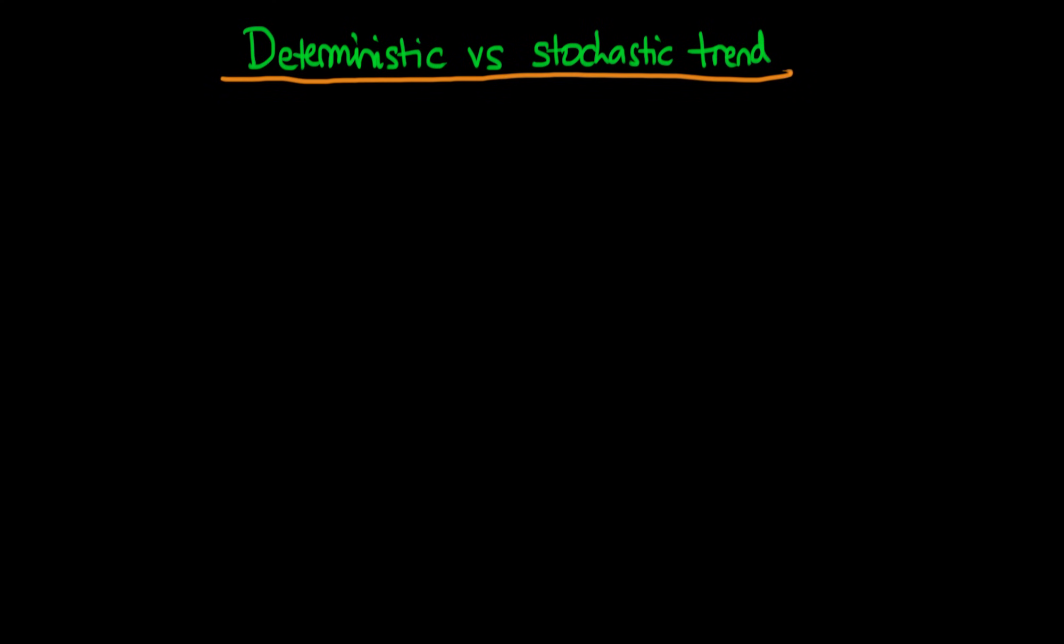In this video I want to start off by defining what I mean by a process which has a deterministic trend and then we're going to compare it with our random walk with drift which we defined in the last video, which another word for that is saying that it has a stochastic or random trend.